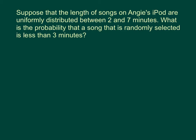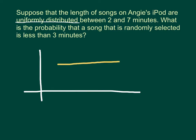So in this problem, suppose that the length of songs on Angie's iPod are uniformly distributed between two and seven minutes. The keyword here is uniformly distributed. So that means I'm going to have on the x-axis and my density function is going to be a horizontal line. And that density function is going to go from the min to the max. In this case the minimum was two minutes and the maximum length of the song was seven minutes. And anything in between has the same chance of happening.